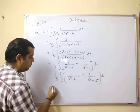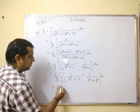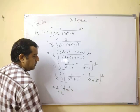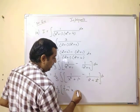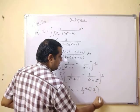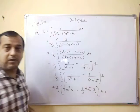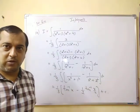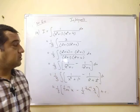1 is 1 square and 4 is 2 square. This gives you 1 by 3. This is 1 upon A means 1 upon 1 tan inverse x upon A means x minus 1 by 2. This is tan inverse x by 2 plus constant. This is the answer. If you want, you can multiply 1 by 3 to both the terms. Please note it down.